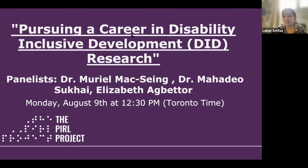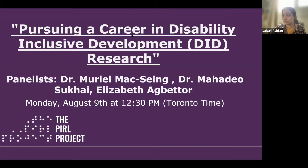Dr. Mahadeo Sakai is head of research for CNIB, the Canadian National Institute for the Blind. He is an internationally accomplished biomedical research scientist and the world's first congenitally blind biomedical research scientist. As a principal investigator for the book 'Creating a Culture of Accessibility in the Sciences,' Dr. Sakai provides insights and advice on practically building inclusive research teams.